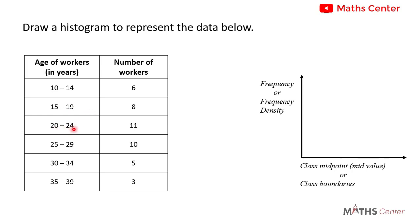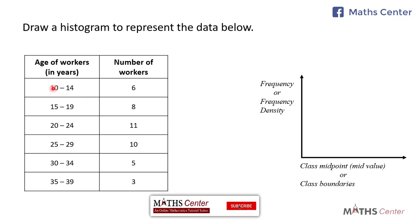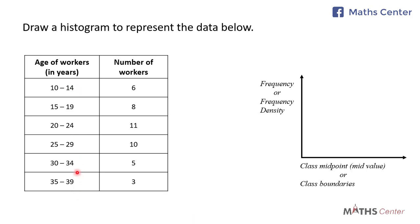The third one: 24 minus 20 gives 4. The fourth one: 29 minus 25 gives 4. The fifth one: 34 minus 30 gives 4, and the last one: 39 minus 35 gives 4. So the difference between the upper class limit and the lower class limit is the same for all classes, which means the class sizes or class widths are all the same.